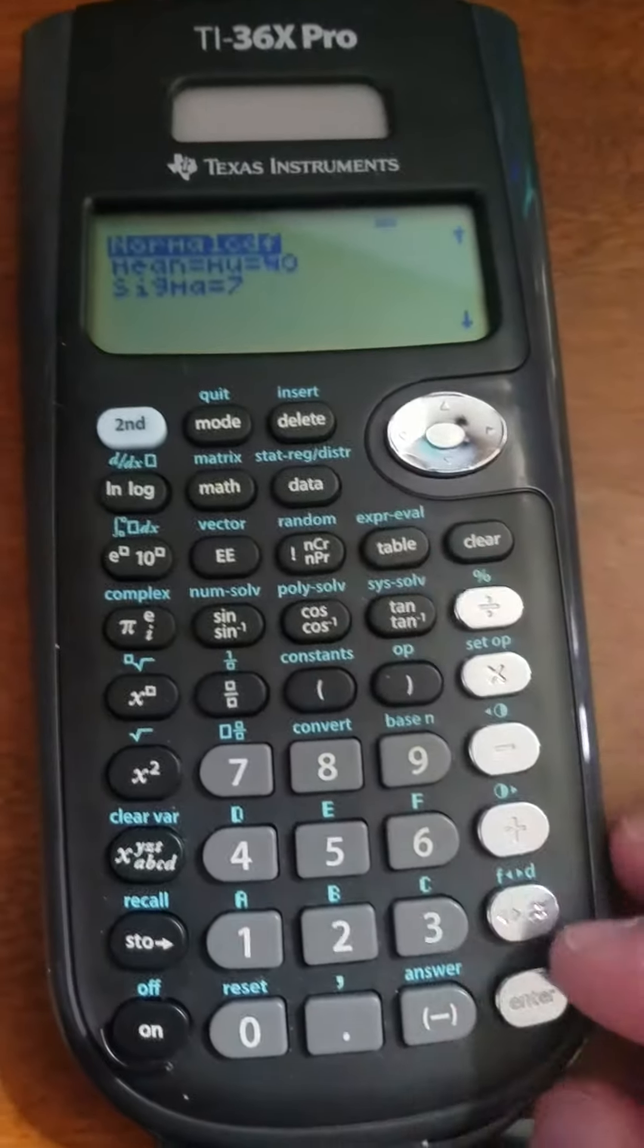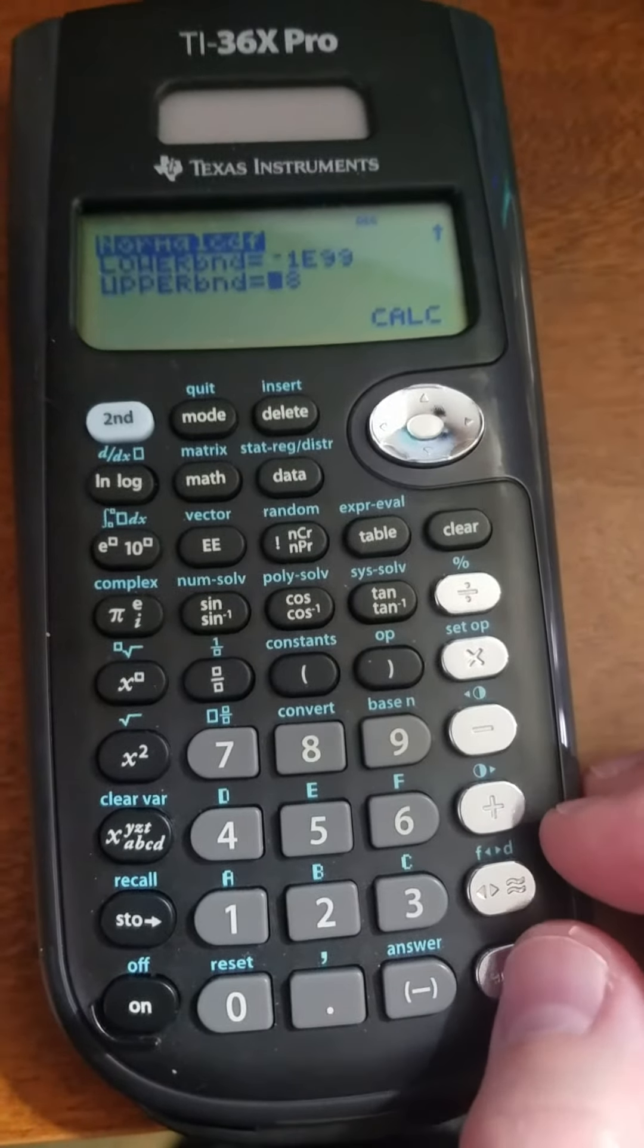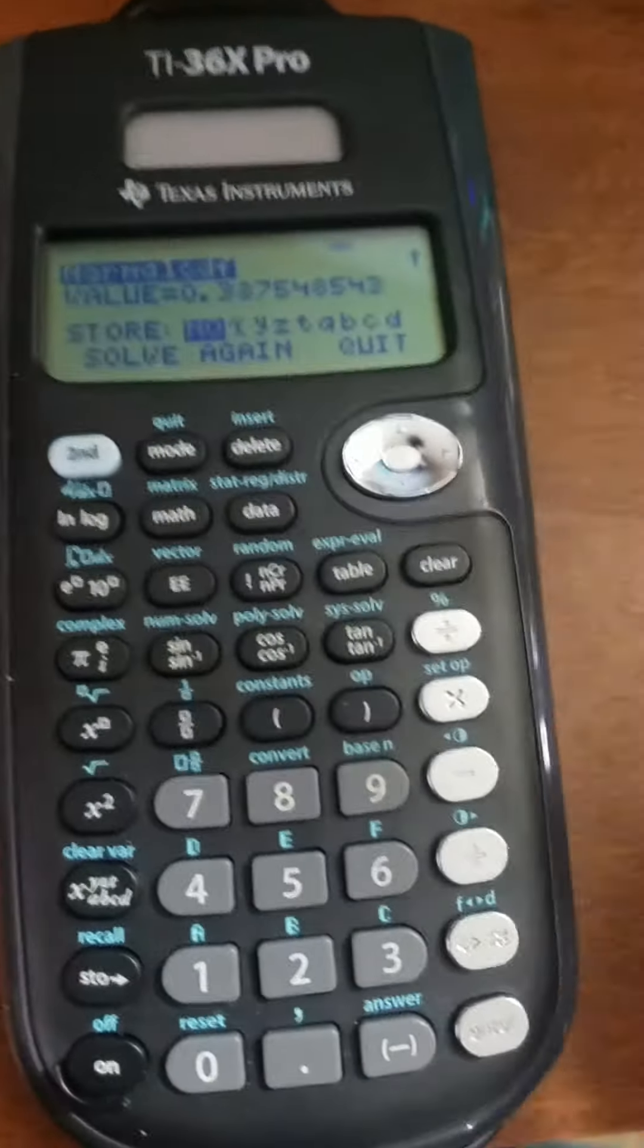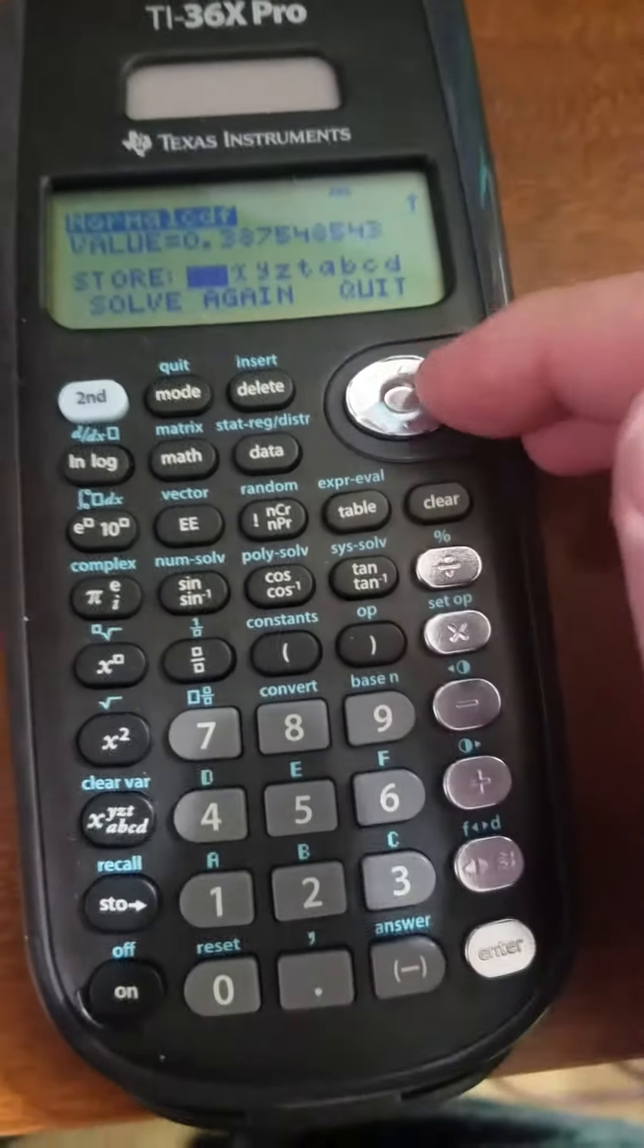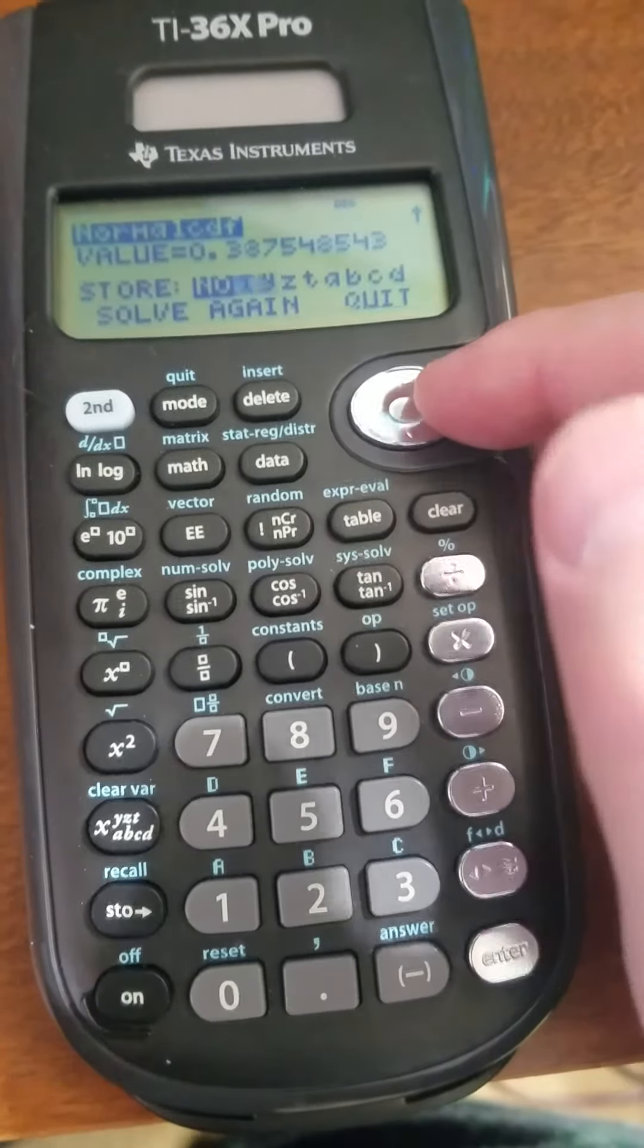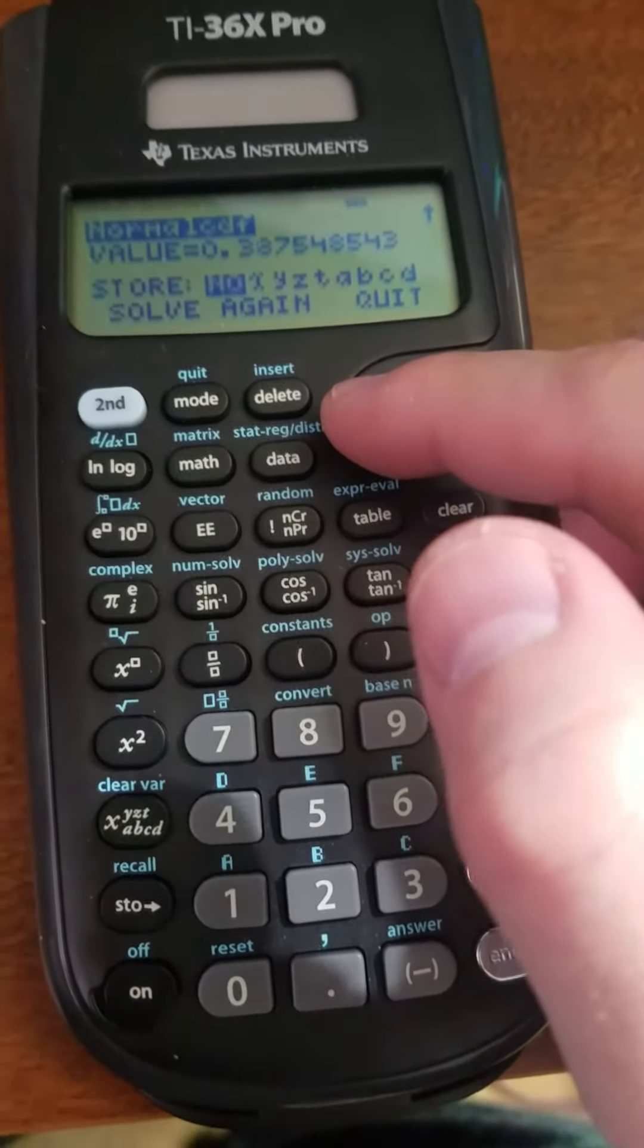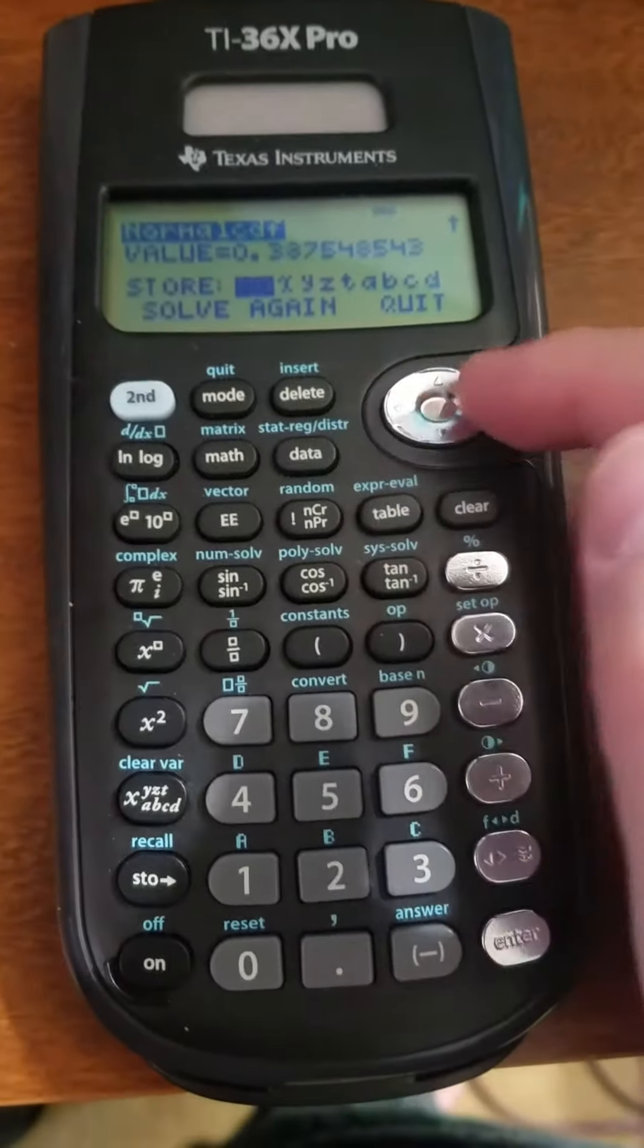My probability of being less than 38 is 0.387. I can store this in a value—I can store it in X or Y if I wanted to use it again later on, especially if I'm going to be using my complement rule. That's handy to do.